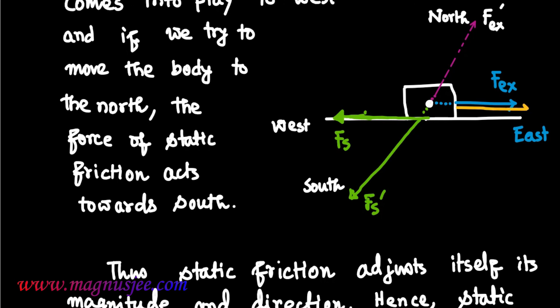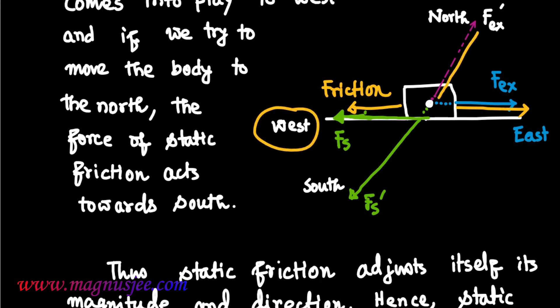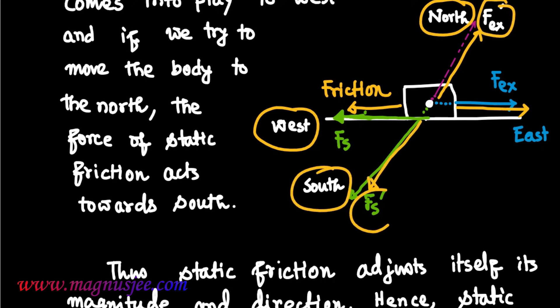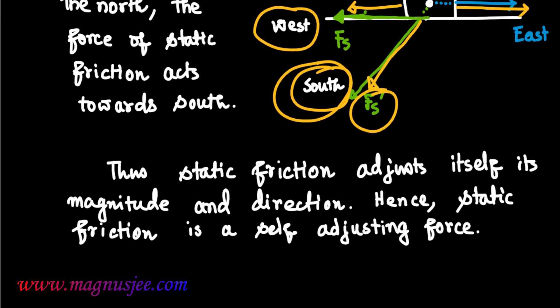In the diagram, if we apply Fex towards east, static friction will be acting towards west. Similarly, if we apply external force towards north, then static friction Fex prime will be acting towards south.